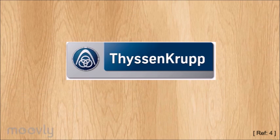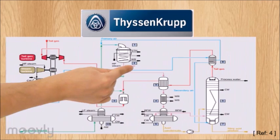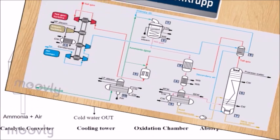One of the companies that utilizes the Ostwald process is Thyssenkrupp, a German company which produces nitric acid through the UHD medium pressure process.